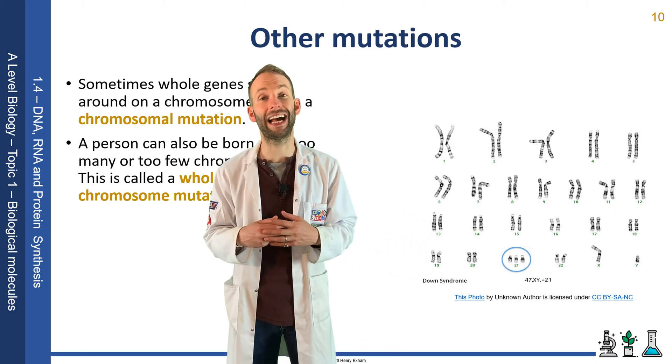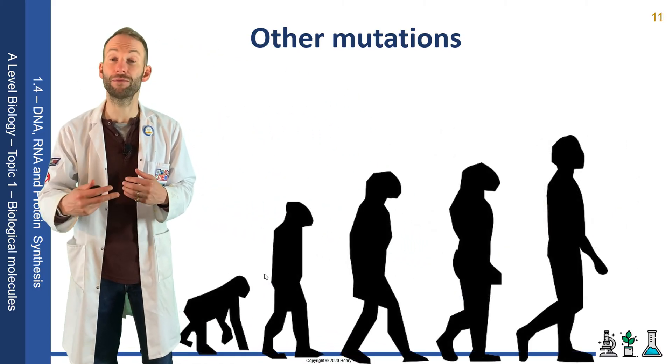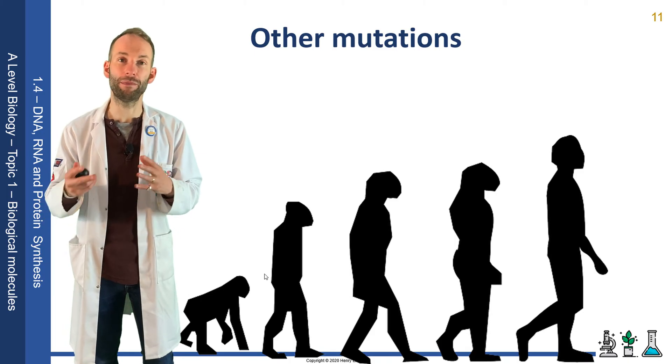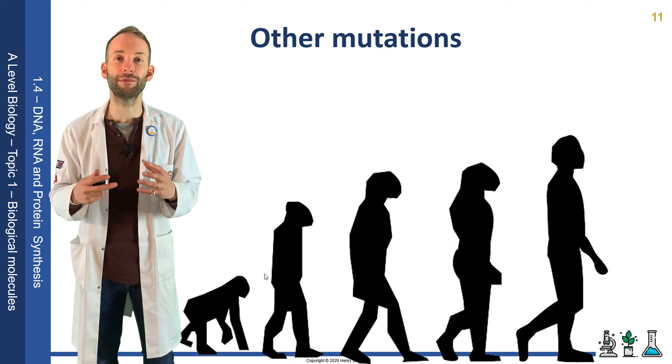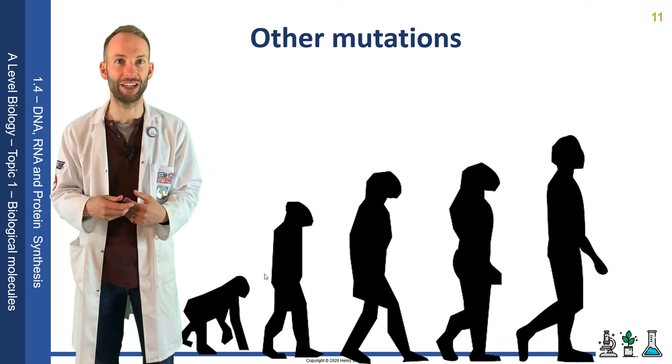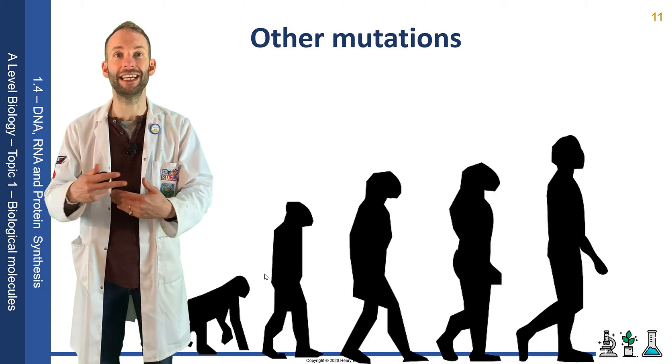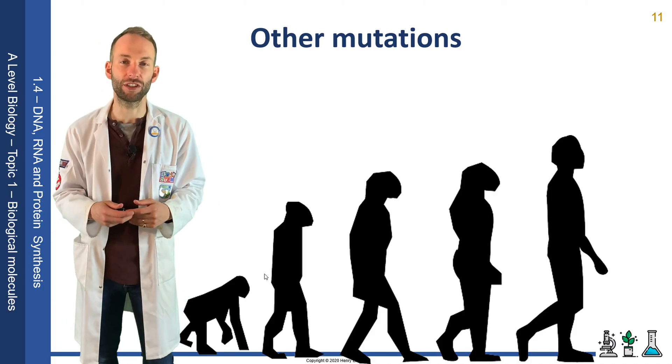Every now and then a mutation occurs which actually improves a protein. It may help an organism to survive and therefore it will be passed on to its offspring, and this is fundamentally the basis for evolution—a build-up of beneficial mutations. Species can change very slowly over millions of years by these rare mutations building up.